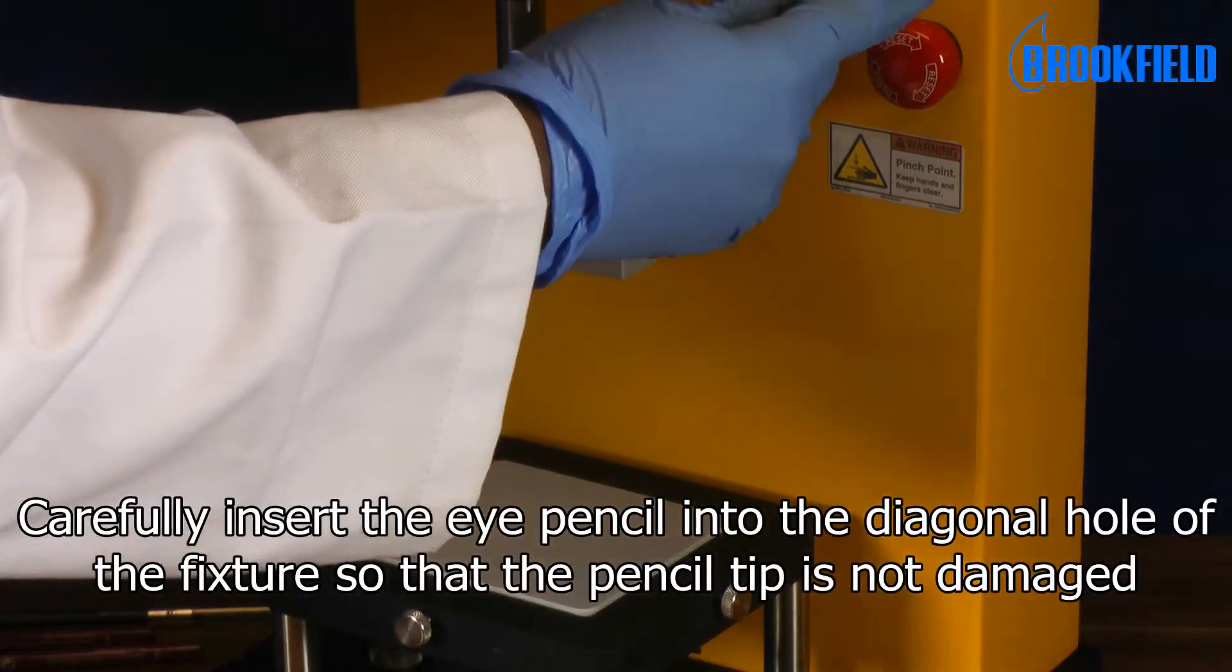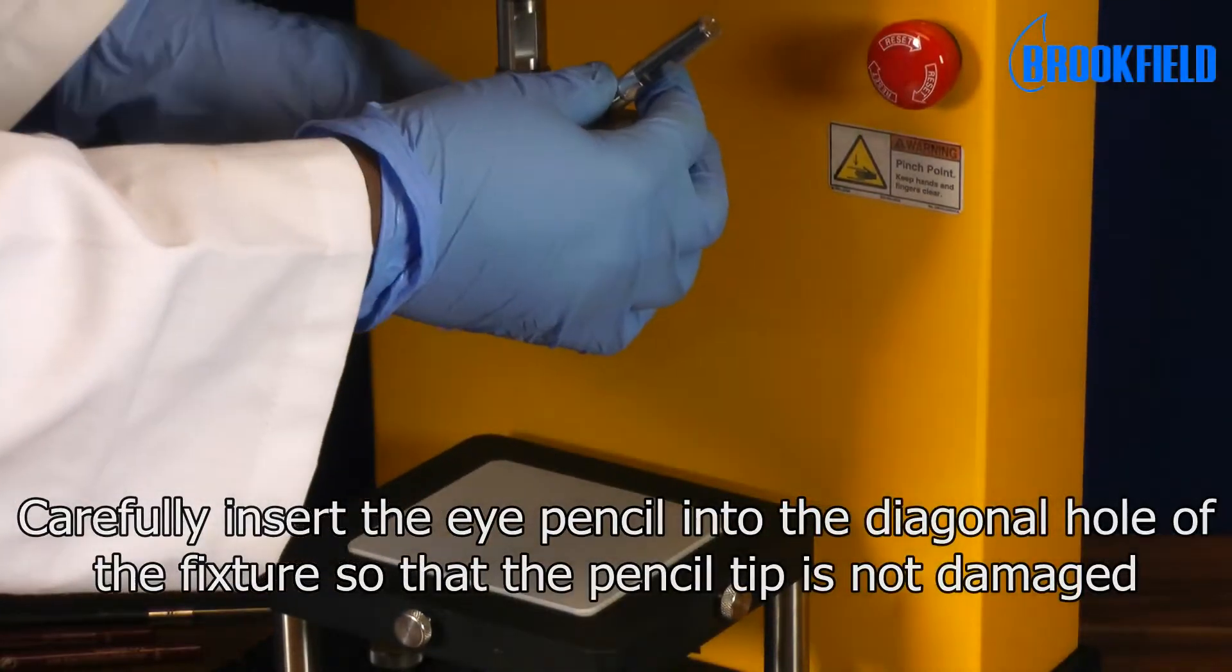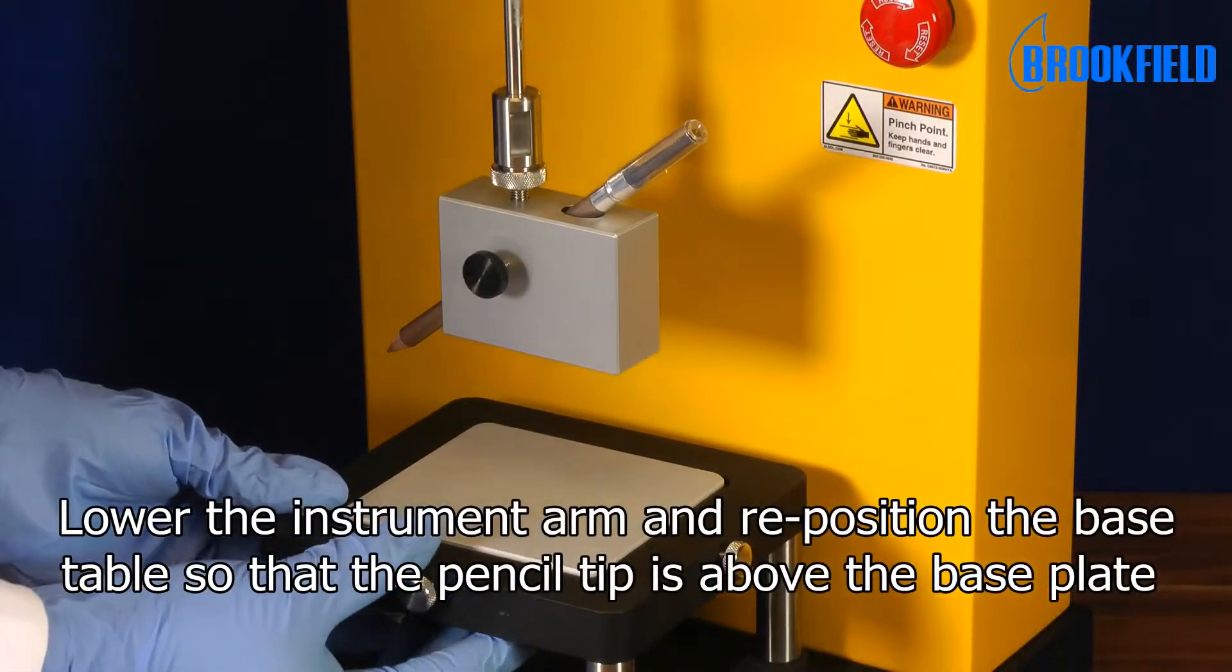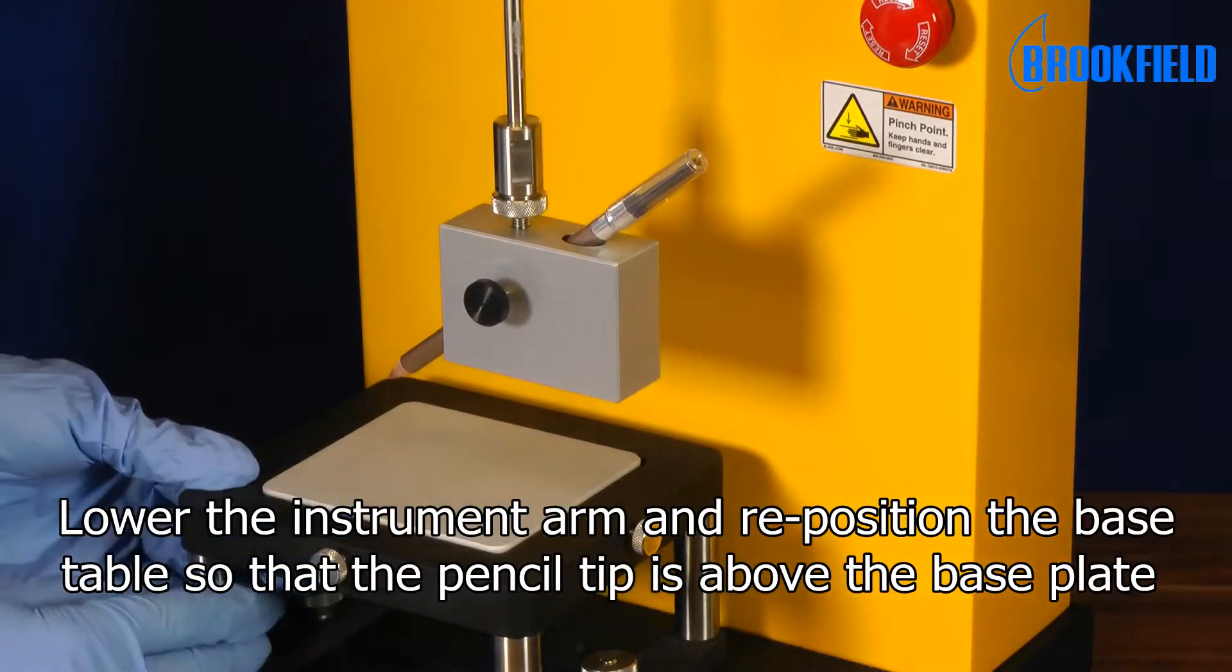Carefully insert the eye pencil into the diagonal hole of the fixture. Lower the instrument arm and reposition the base table so that the pencil tip is above the base plate.